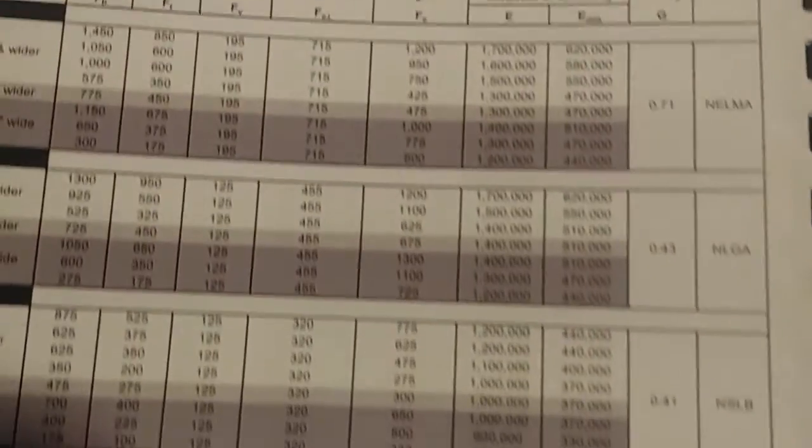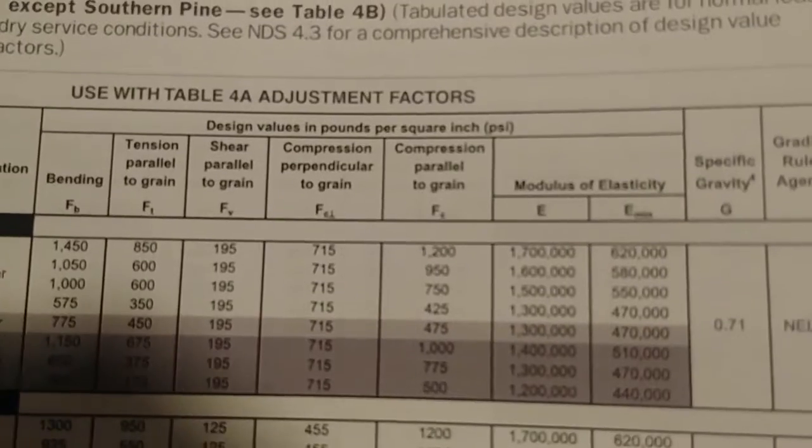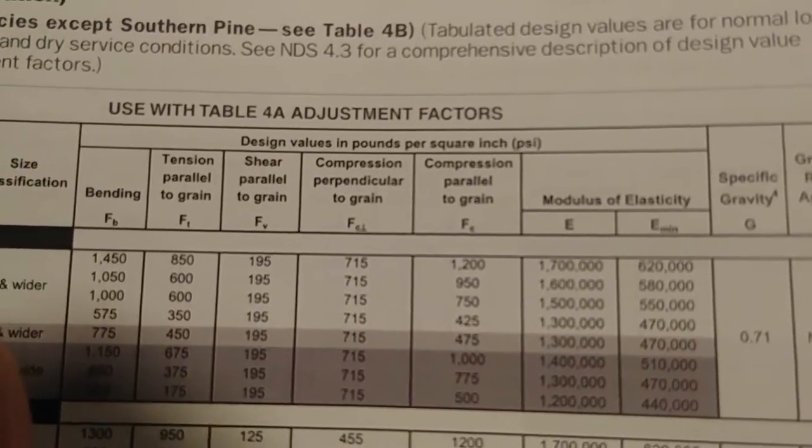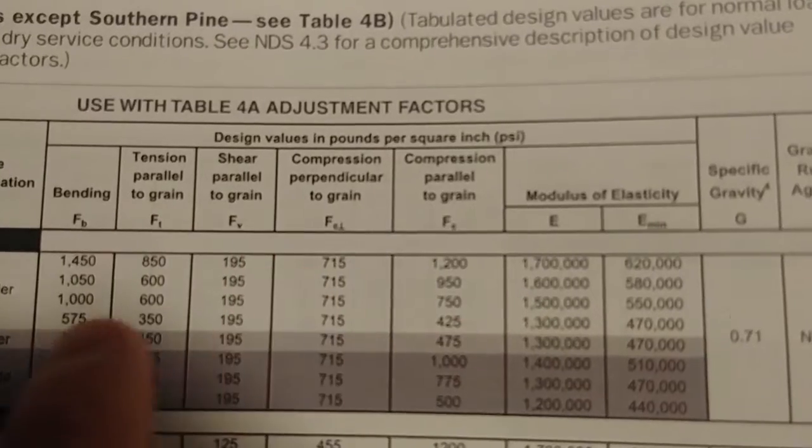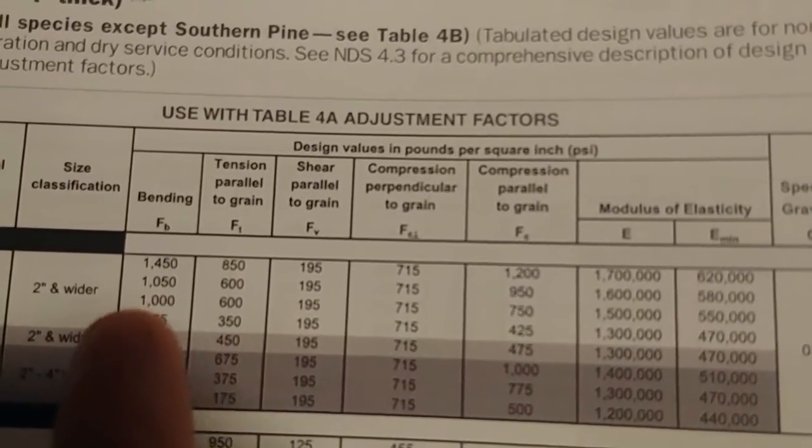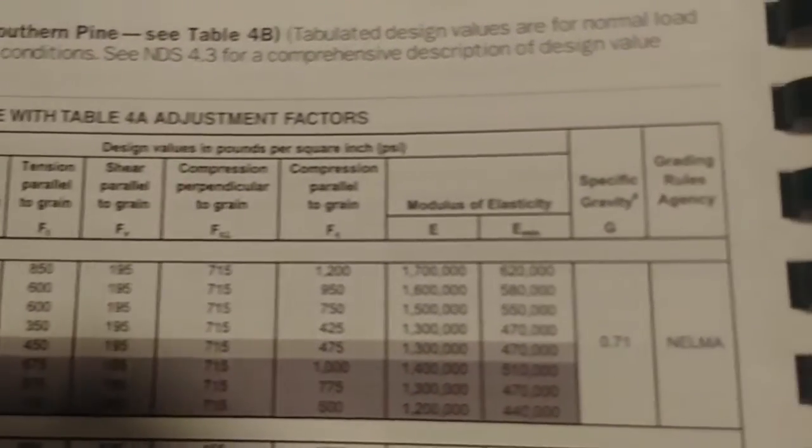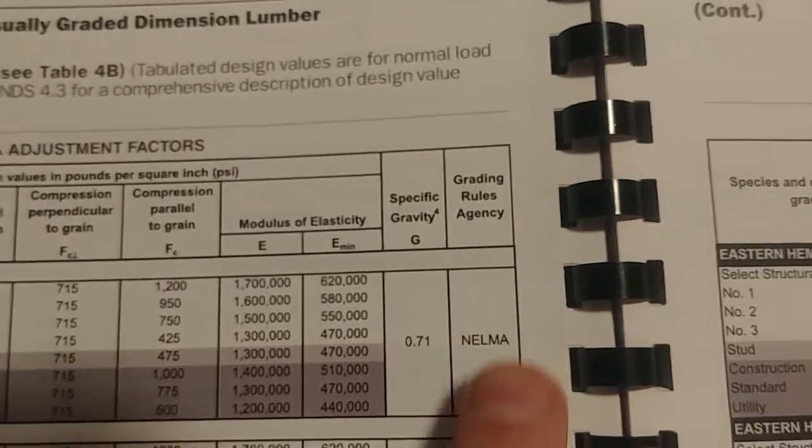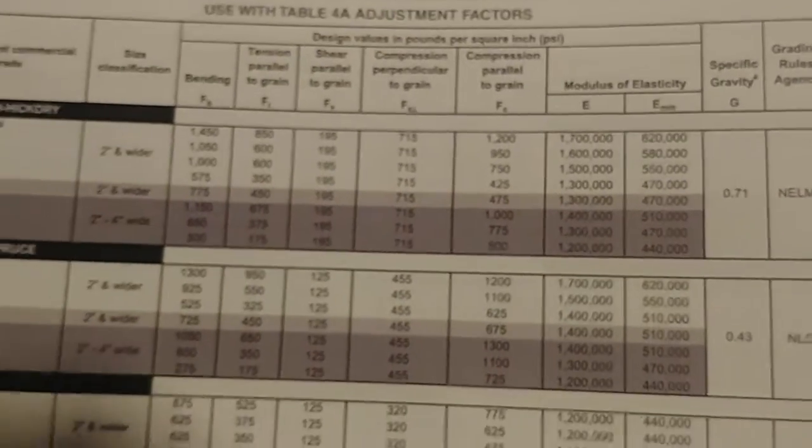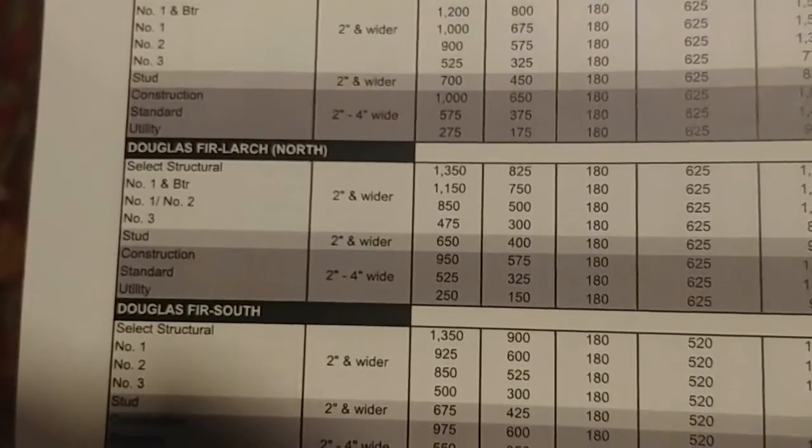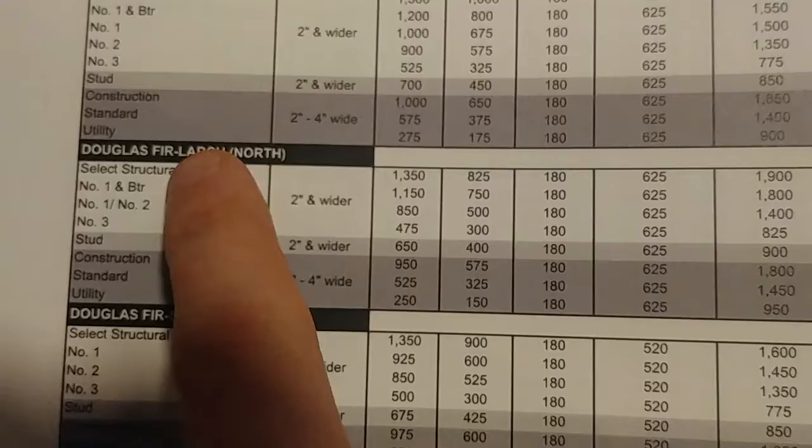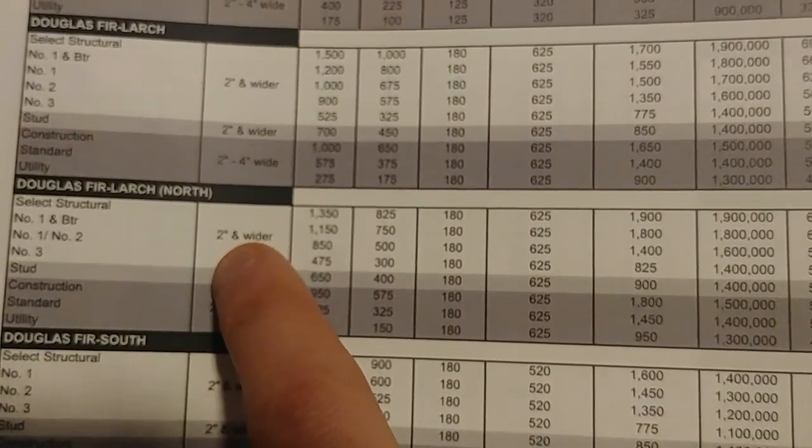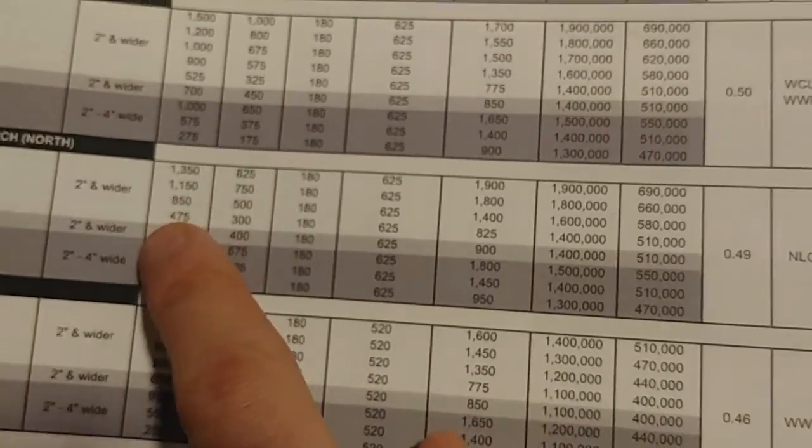And then all of these values, if you go up to the top of the chart, you have bending tension, parallel to grain, shear parallel to grain, you guys can read the rest, but basically it gives you design values in a stress. So pounds per square inch, force over area, stress, for all the different loading criteria of the member, as well as modulus of elasticity, specific gravity and grading rules agency. That's just who specifies for each species of wood. So we're going to go down and we're going to take down the information for a Doug fir large, for a number one slash number two, because we're number one, two inches and wider. So that's us because we have a two by 10 and we're going to take down all this information.